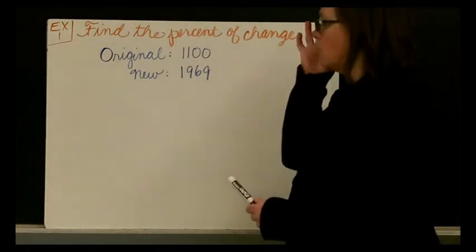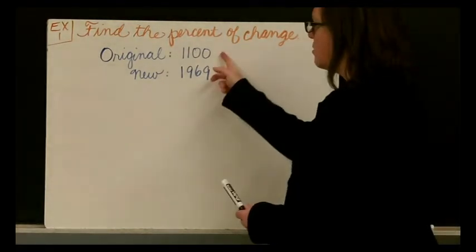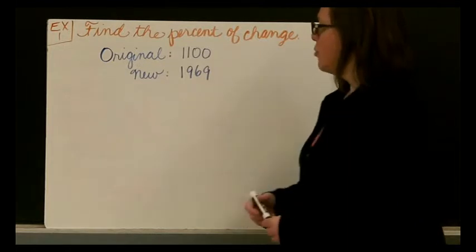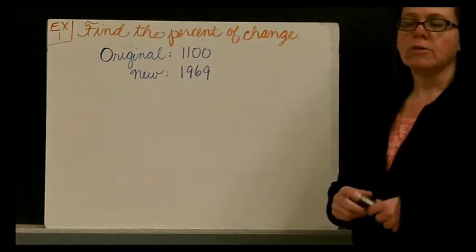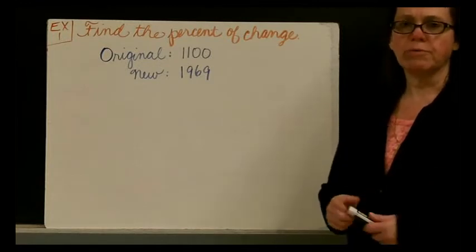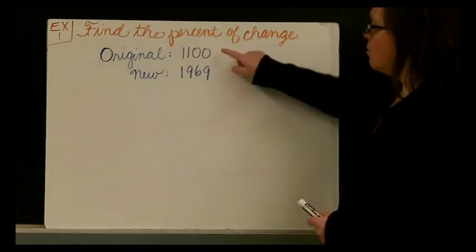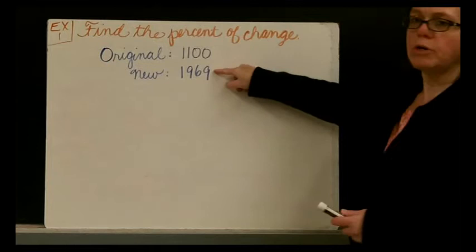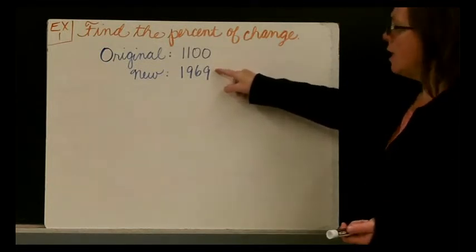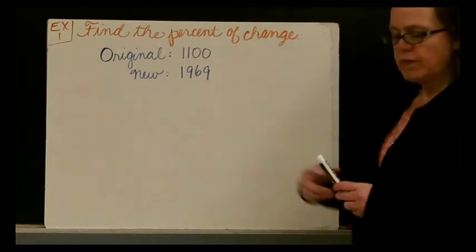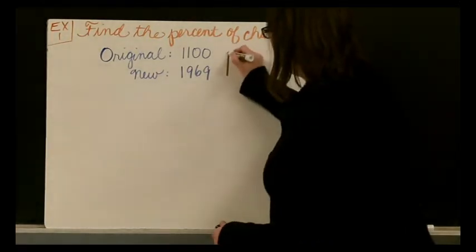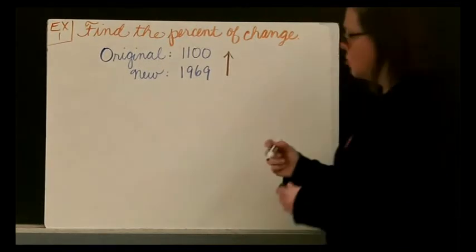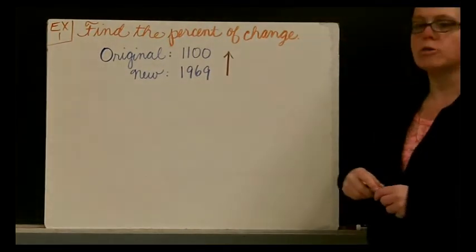And so here we have our first example. Find percent of change. Our original amount is 1,100, and our new amount is 1,969. So as I said, in our first step, we have to determine when we move from the original to a new number, are we increasing or decreasing? You can see that the number is bigger. It's increasing. So we're going to draw our arrow, an up arrow, just to remind us that the amount is going up.